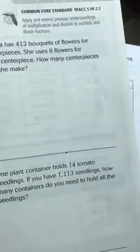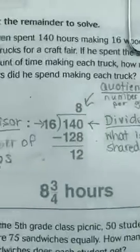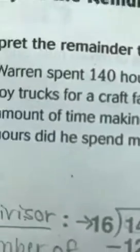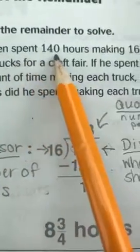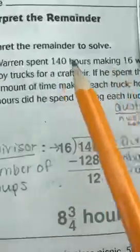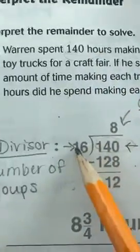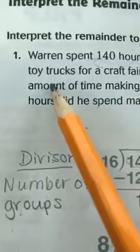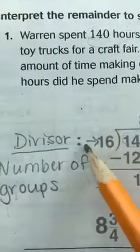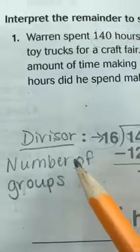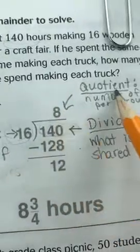We're on lesson 2.7 page 43. Before we begin, I want to go over some important vocabulary. Looking at 140 divided by 16 equals 8: the number inside is called your dividend — it is what is being shared. In this problem, Warren spent 140 hours making 16 wooden toys. The 140 hours is what's being shared, divided by 16 wooden toys, which is your divisor. The result — hours spent on each toy — is your quotient.